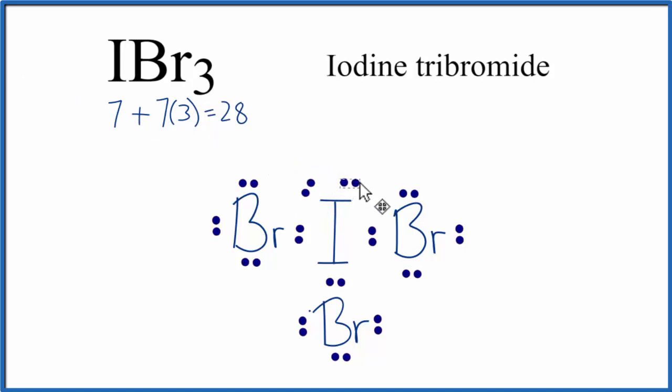In fact, in this case, it has 10. Each of the bromines has 8 valence electrons, so their octet is complete.